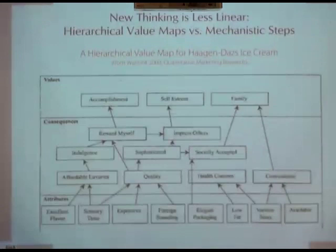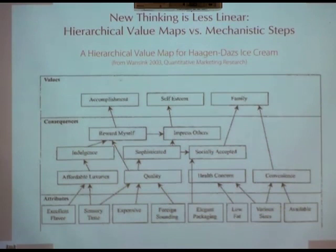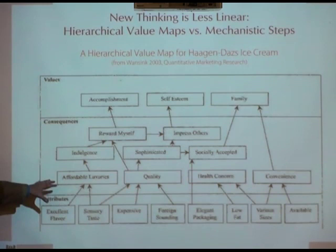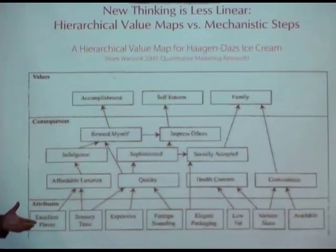In this particular case, stated from one of the papers, we've got the attributes at the bottom, and the attributes relate to these consequences. So you say, why do I like Haagen-Dazs? Well, it's got excellent flavor. Why is excellent flavor important to you? Well, it's sort of an affordable luxury — it's an indulgence, a way to reward myself. Why is rewarding yourself important to you? Well, when I do that, I feel a sense of accomplishment.